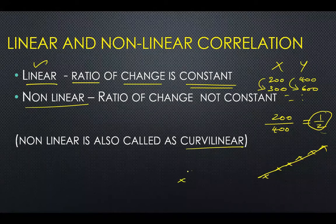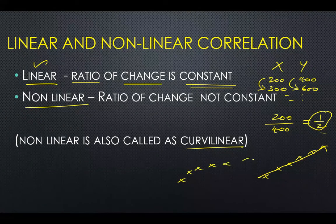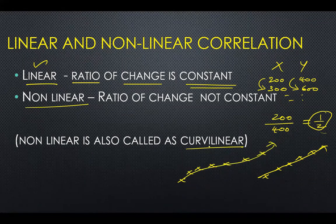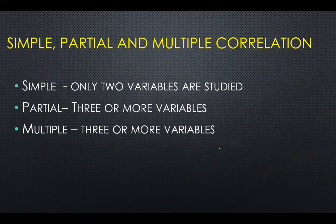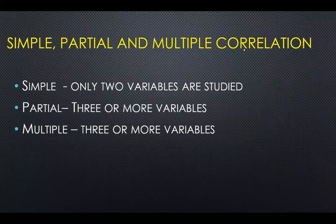Non-linear correlation is also called curvilinear correlation, because when the ratio is not equal you get a curve on the graph rather than a straight line.